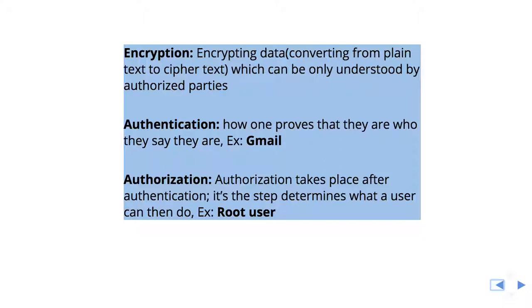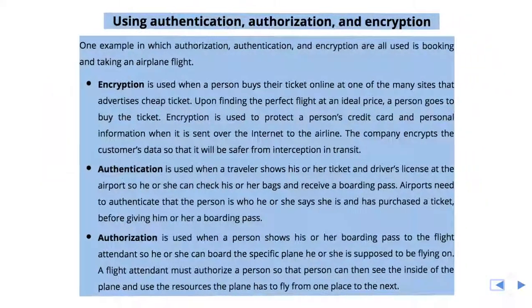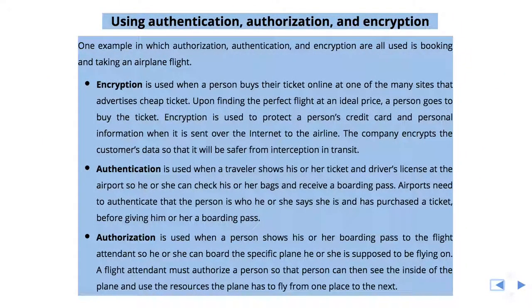So this is a basic overview of encryption, authentication, and authorization. Here I have listed a scenario — booking a flight ticket — where we are using all three: encryption, authentication, and authorization. You can pause the video and go through these details, and you will have an idea of what encryption, authentication, and authorization are and how they will be useful for us.